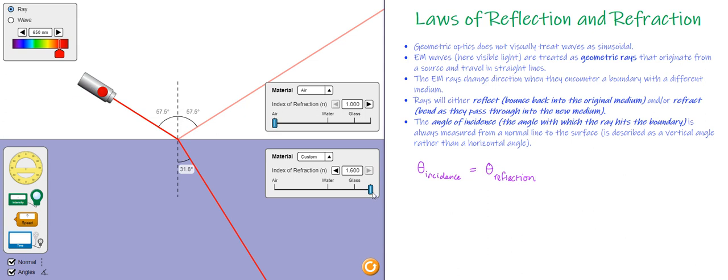No matter what we change the indexes of refraction to, we see that the angle of reflection is going to be the same no matter what. So I'm going to go back here to water again, so we'll put it at 1.333, and what we're going to do is now take a look at the relationship between the angle of incidence, which here is 57.5 degrees, and the angle of refraction.